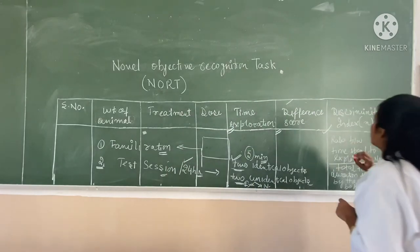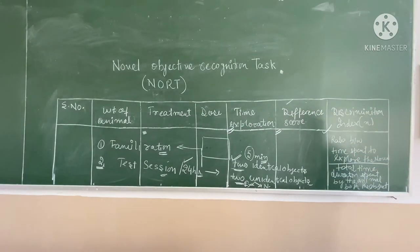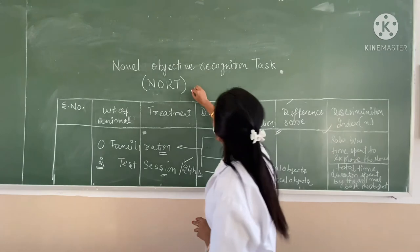After that, we have to calculate the discrimination index. Discrimination index representing the ratio between the time spent to explore the novel object divided by total time duration spent by the animal for both objects.